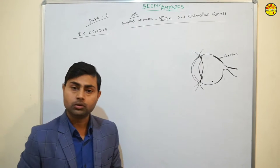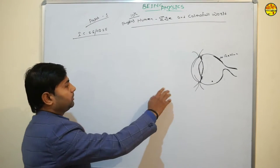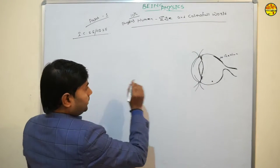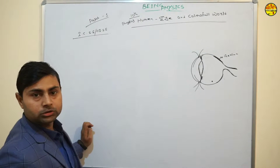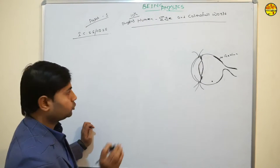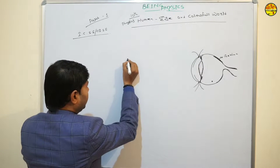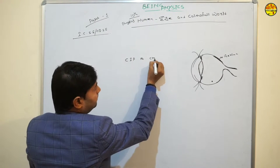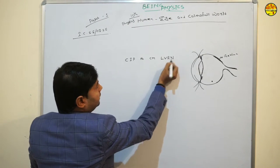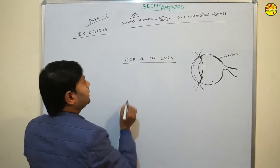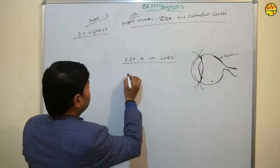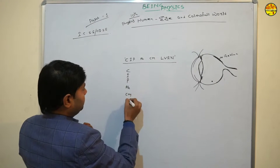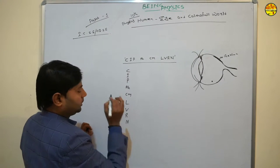Let's start Human Eye and Colorful World. First, I will give you a trick to remember the parts of the eye. We will use a mnemonic. The letters are: C, I, P, A-H, C-M, L-V, R-N. I will read it here — what is the first word? C.